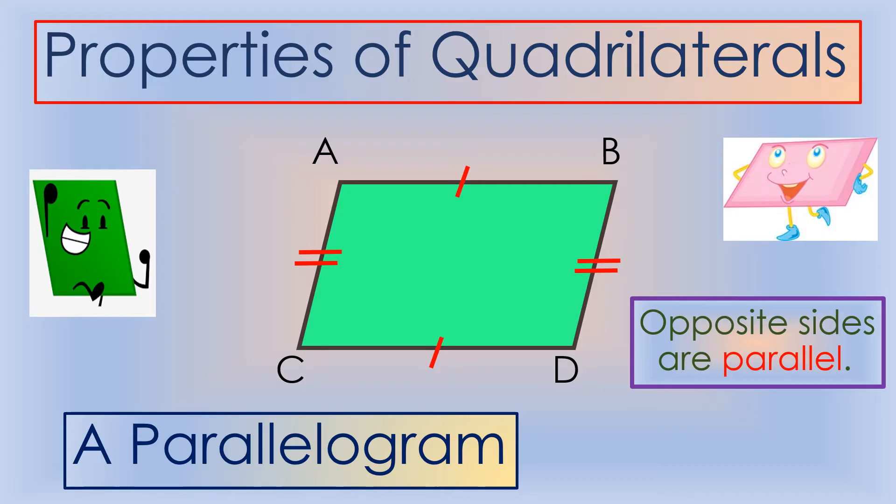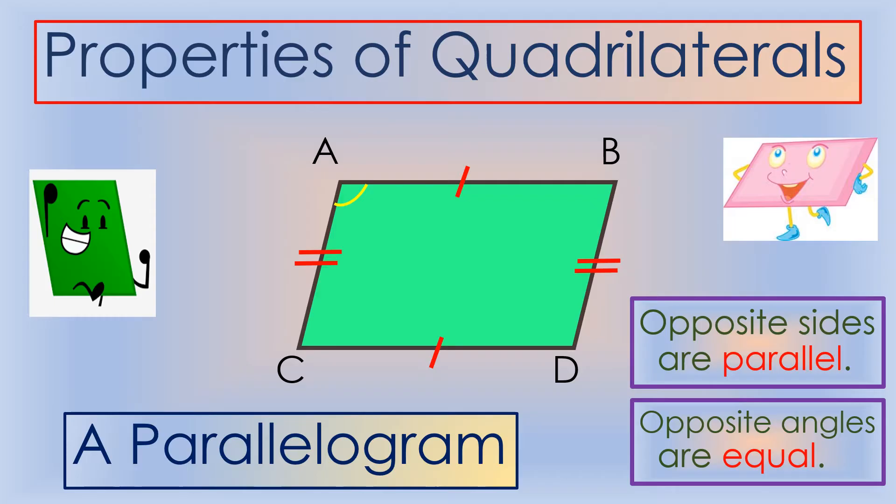Now, looking at the angles, we can say that opposite angles are equal. Angle A is equal to angle D, while angle B is equal to angle C.